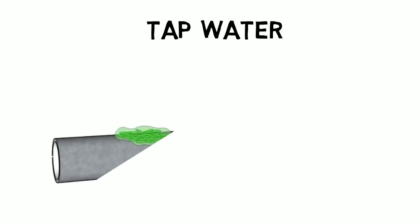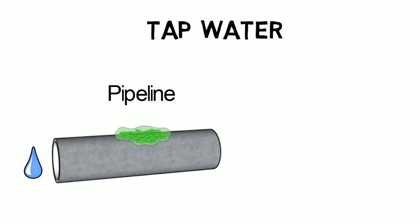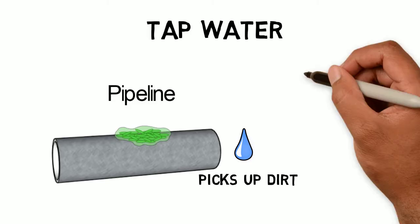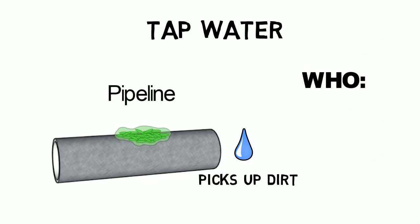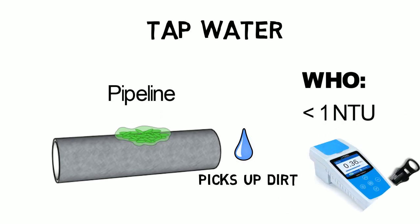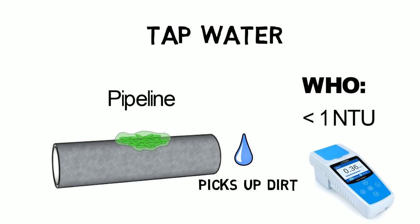Tap water travels through miles of water supply pipes and can pick up cloudiness due to broken or dirty pipes. The WHO, World Health Organization, published that the turbidity of tap water should ideally be below 1 NTU. If you're unsure about the quality of your tap water, you can test it with a turbidity meter.